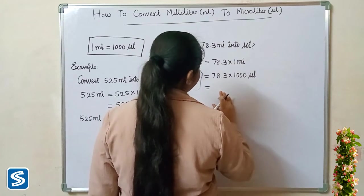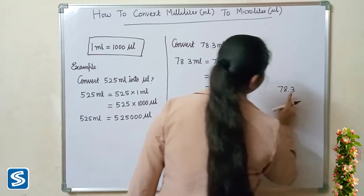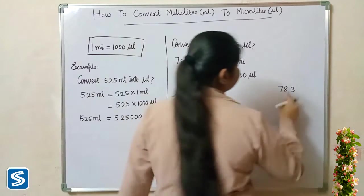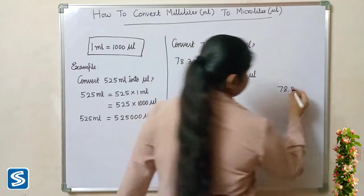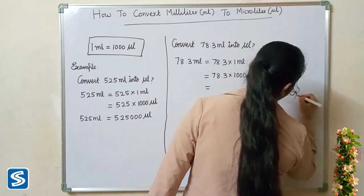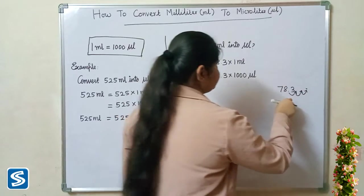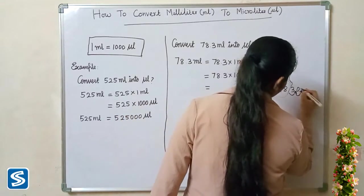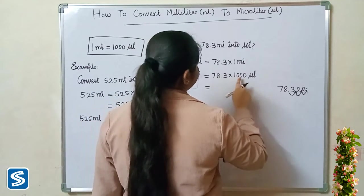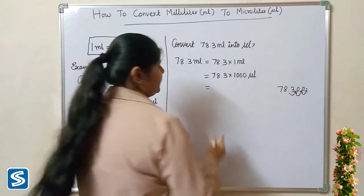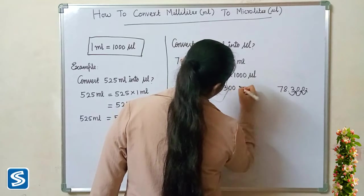The easy way to multiply a decimal number with one thousand is to move the decimal point three places to the right, because one thousand has three zeros — one, two, three. We fill zeros in the extra spaces. So when we multiply seventy eight point three with one thousand microliters, our answer will be seventy eight thousand three hundred microliters.